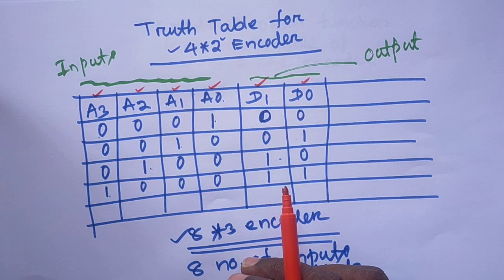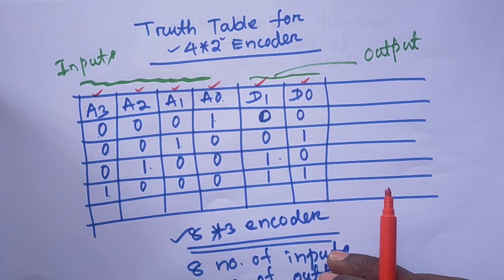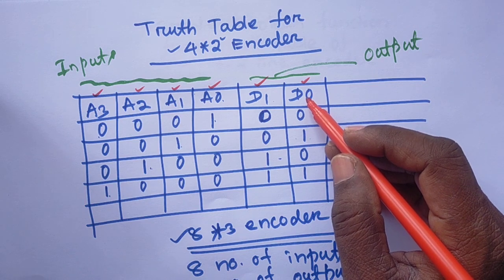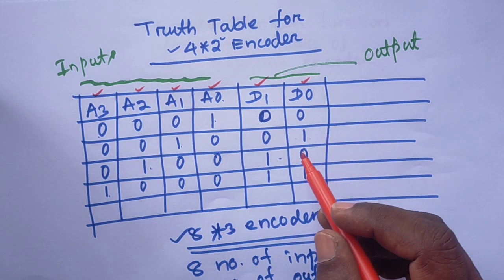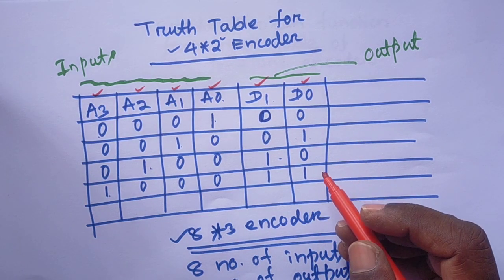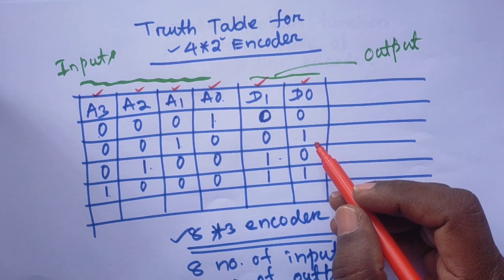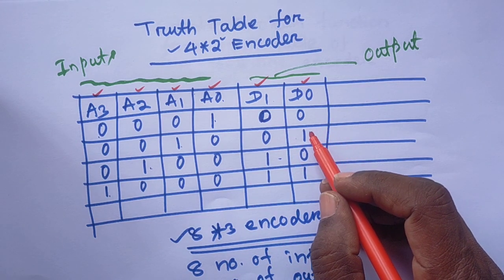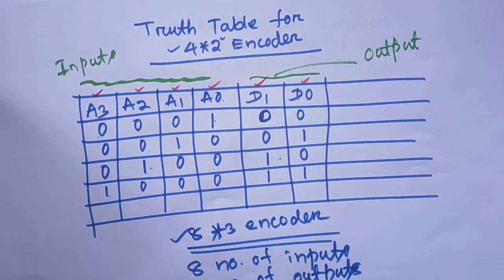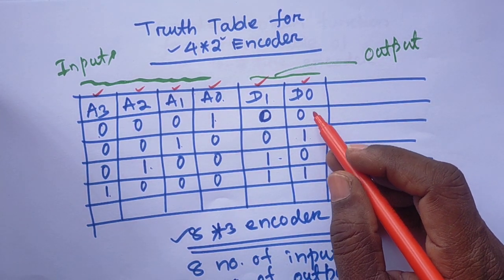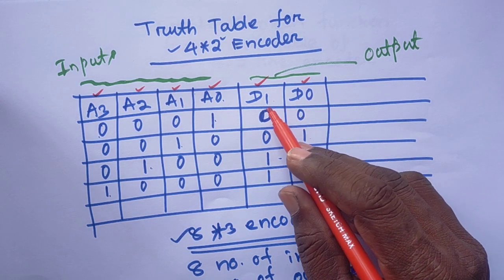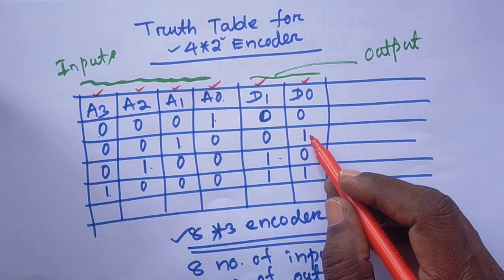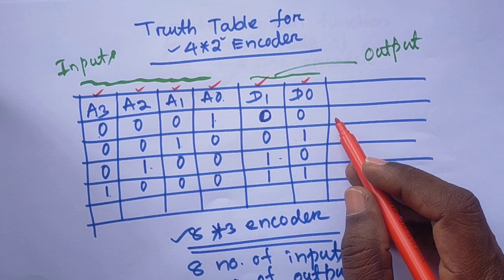Now we will see, in a very simple way, how to find out the Boolean function from this table. We will consider the d0 output and d1 output. The Boolean function will be created as per the binary form — if a bit is 1, then we check how that 1 is generated. If the value of d0 or d1 is 0, we do not consider it. Only when it is 1 do we consider it. This is the basic concept.